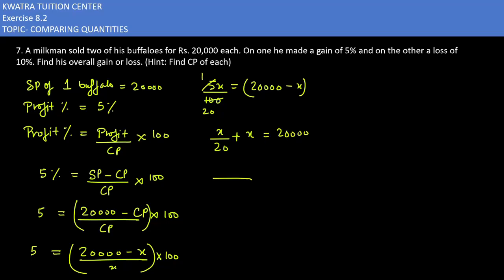Now left side, we take LCM of it, so it will be 20. Second term you multiply by 20x. Right side we have 20,000. So x plus 20x will give you 21x.